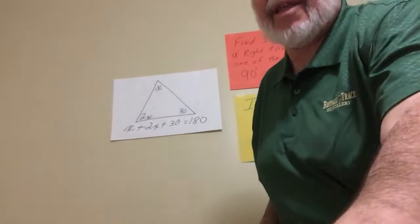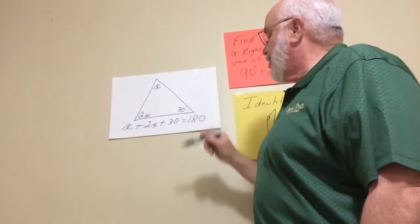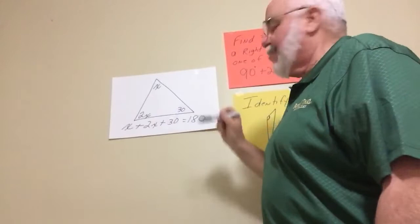we've got x plus 2x plus 30 equals 180. Remember, here's the thing we've got to remember. Oops, let me put this over here. Sorry about that. So they give us x, 2x, and 30 degrees. So we just write it down: x plus 2x plus 30 equals 180.